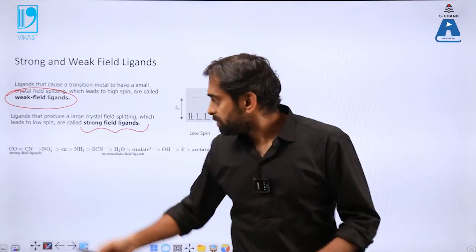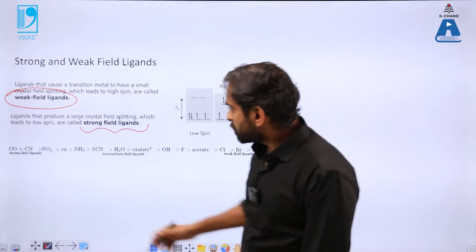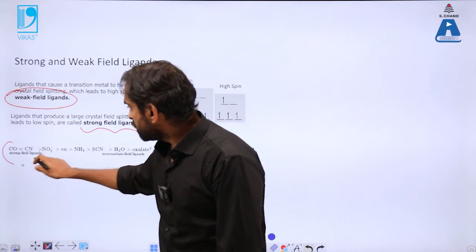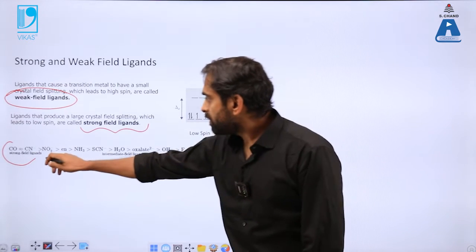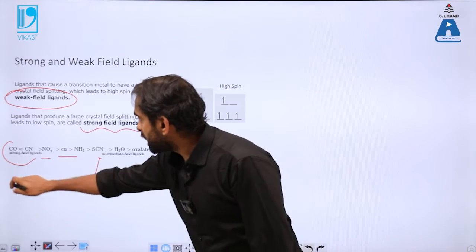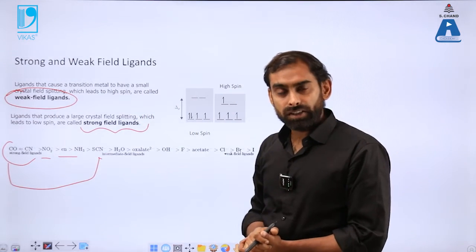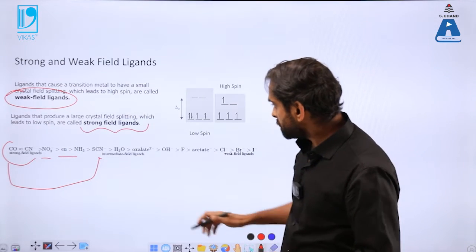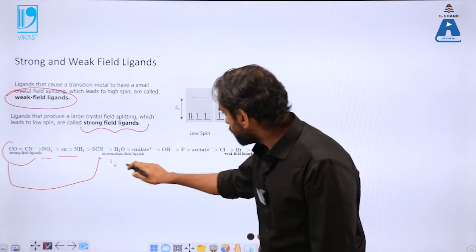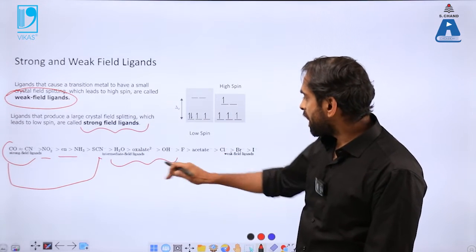You can also see here some examples in the order of their strengths. So ligands such as CO, CN, NO2, ammonia, SCN, all these are considered to be strong field ligands. That means they are capable of causing much more difference in the eg and t2g orbitals. Whereas water, OH, oxalate, these are kind of intermediate field ligands.